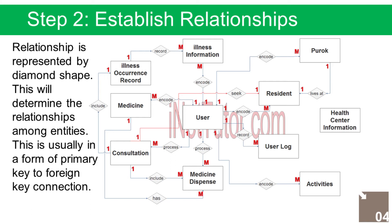Relationship 2: The user records or encodes the list of diseases and their information — a 1 to many relationship. Relationship 3: The user records or encodes the list of medicines in their inventory — a 1 to many relationship.